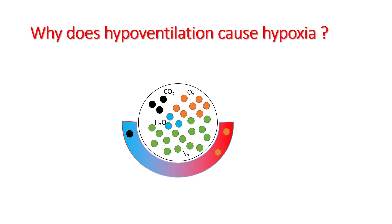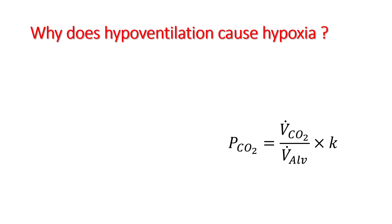So why does hypoventilation cause hypoxia? In a normal alveolus you have nitrogen, water vapor, carbon dioxide, and oxygen. If this alveolus does not exchange air, the carbon dioxide will keep on increasing in the alveolus and the levels of oxygen will keep on dropping as exchange happens. Nitrogen and water vapor are in equilibrium with the blood, so their levels will not change. So if your carbon dioxide level in your alveolus rises, the proportion of oxygen molecules in that alveolus is going to drop, and that results in hypoxia.